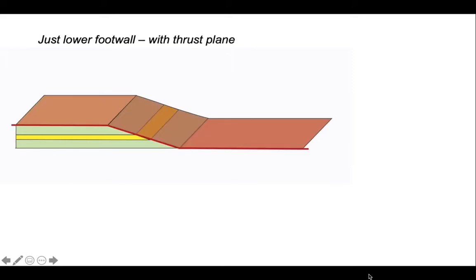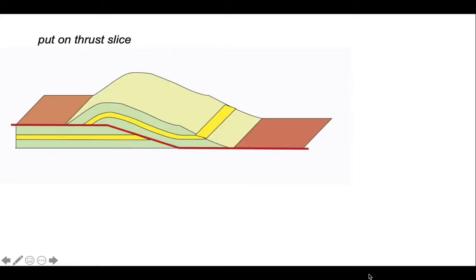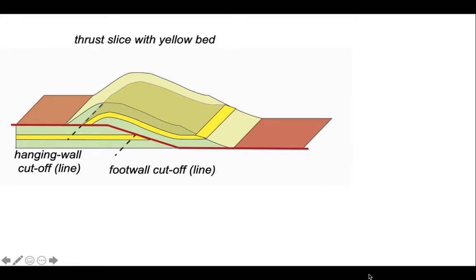Let's strip this model away - the thrust sheet on top and the horse to reveal the ultimate foot wall. This is just the lower foot wall with the thrust plane. We can see that the top of the yellow abuts against this thrust in the foot wall, a foot wall cutoff line. Putting the thrust slice on, we can identify the yellow bed with the hanging wall cutoff line and its matching foot wall cutoff line.